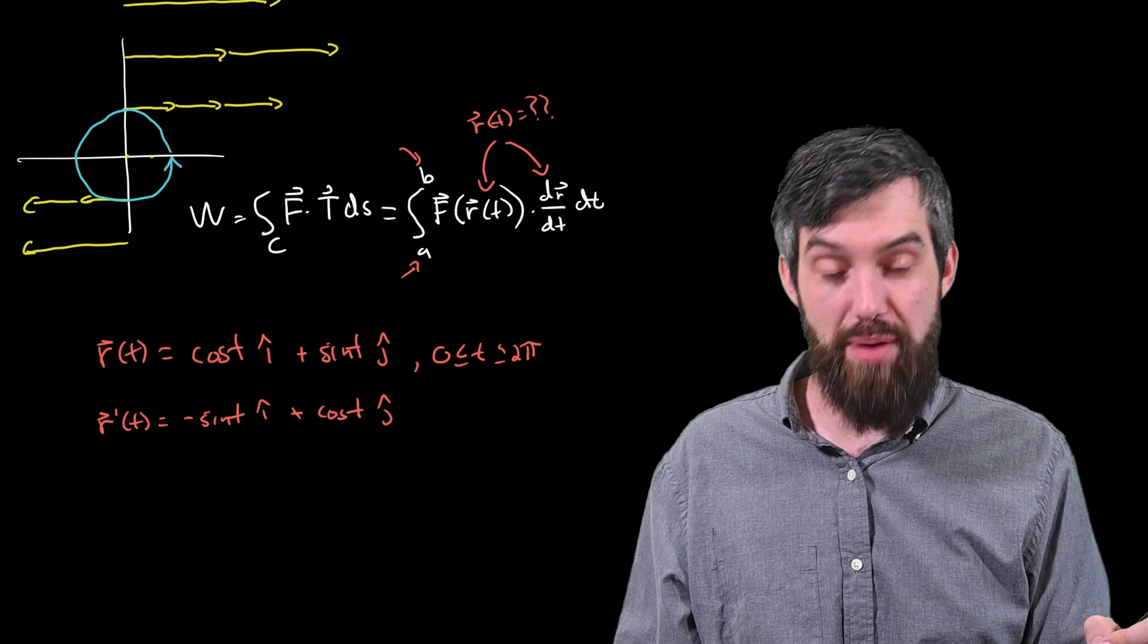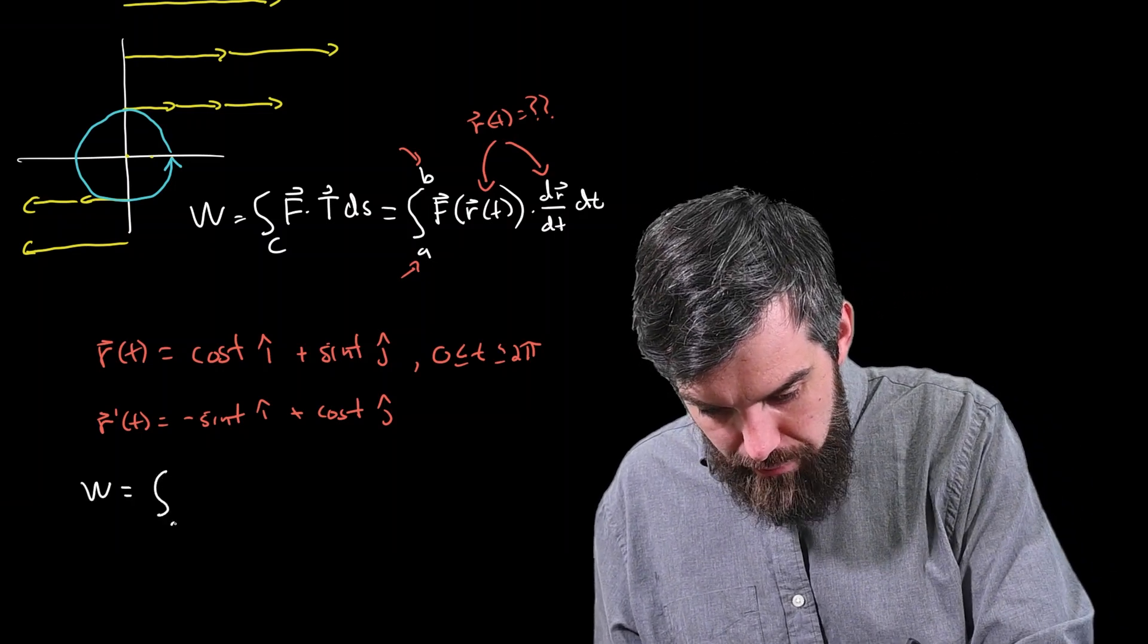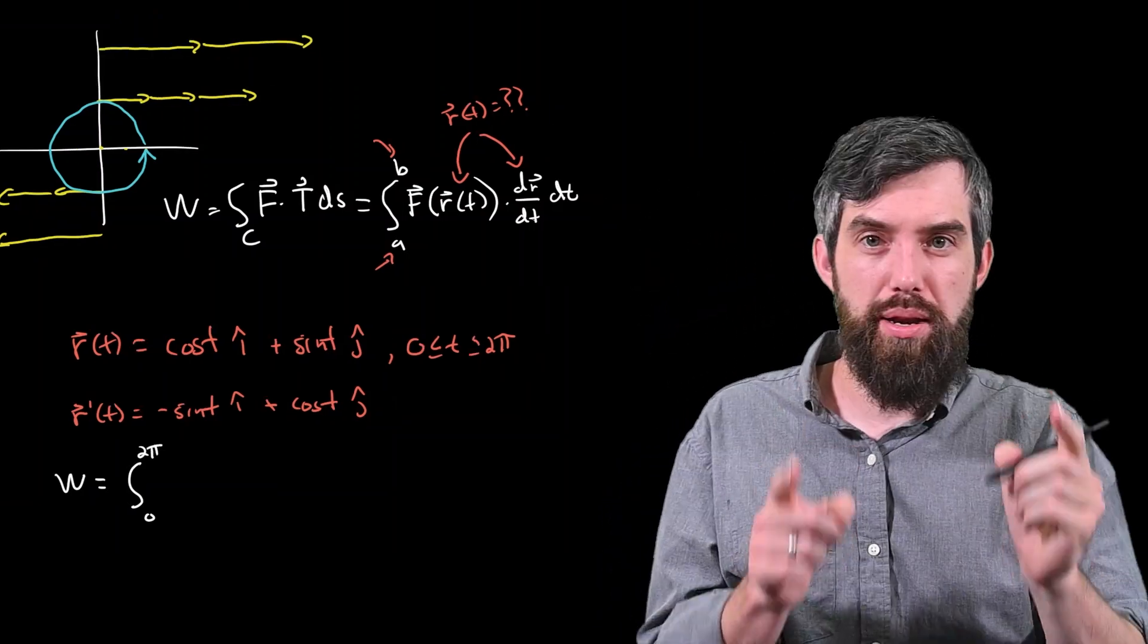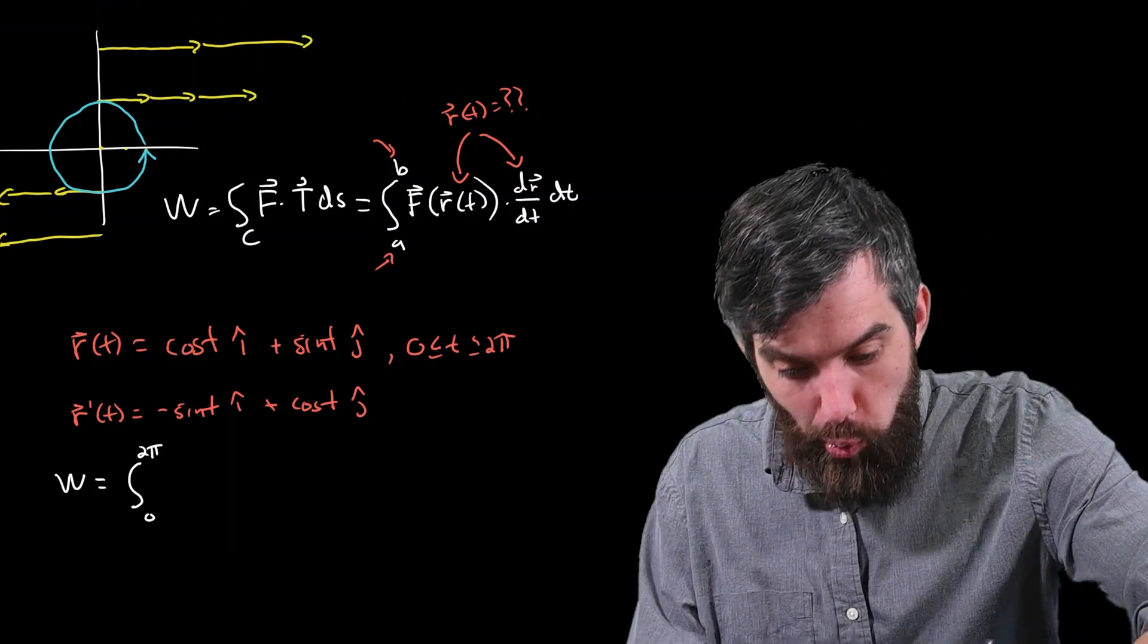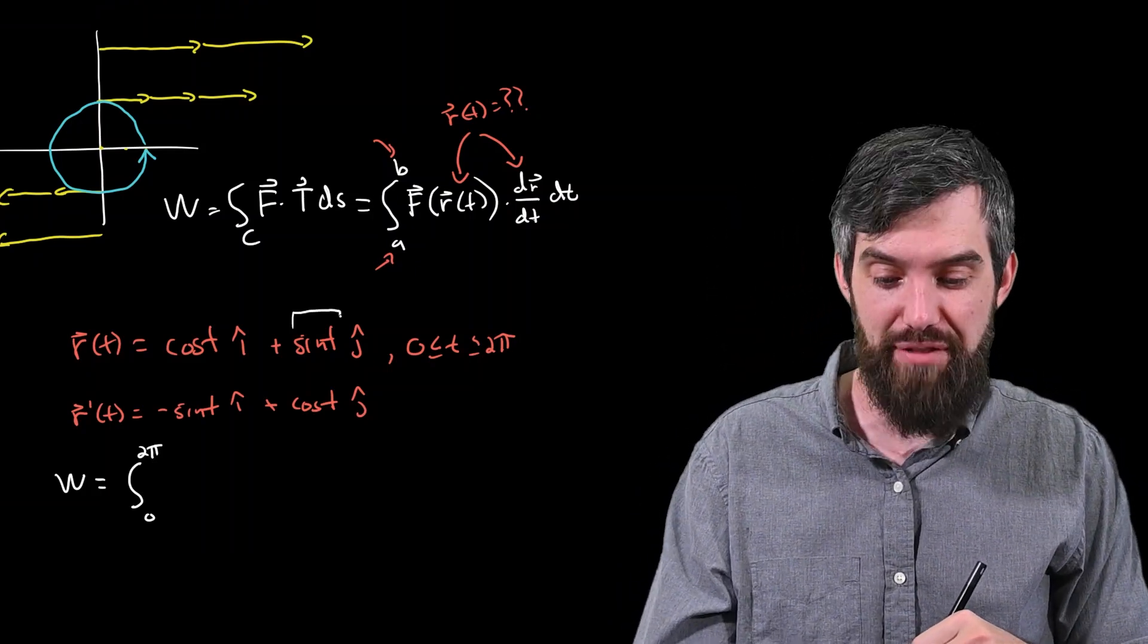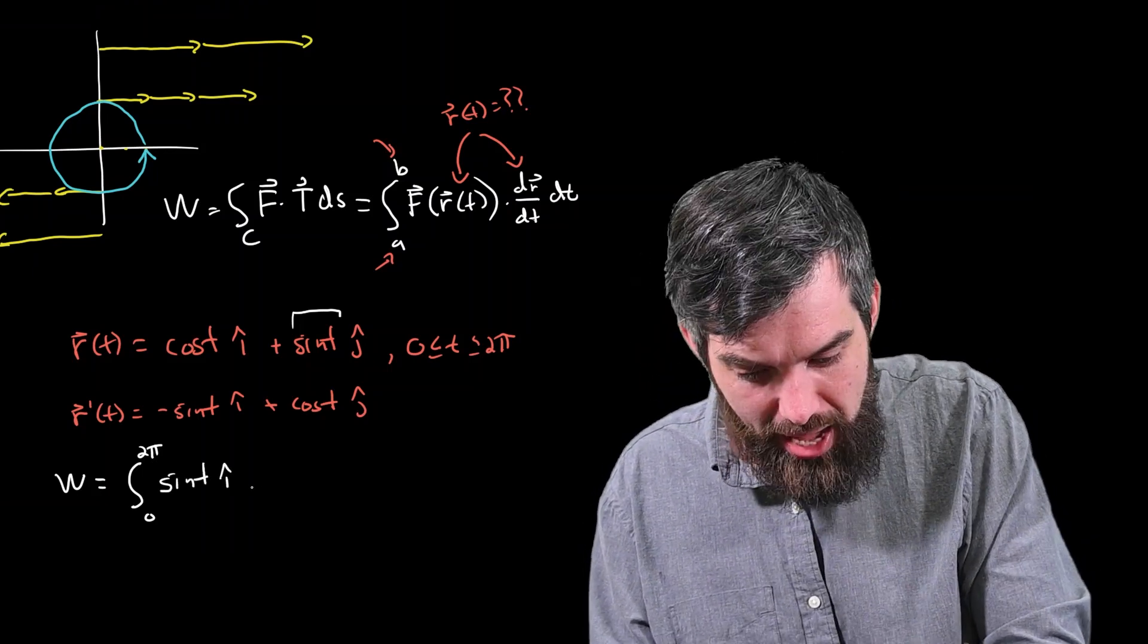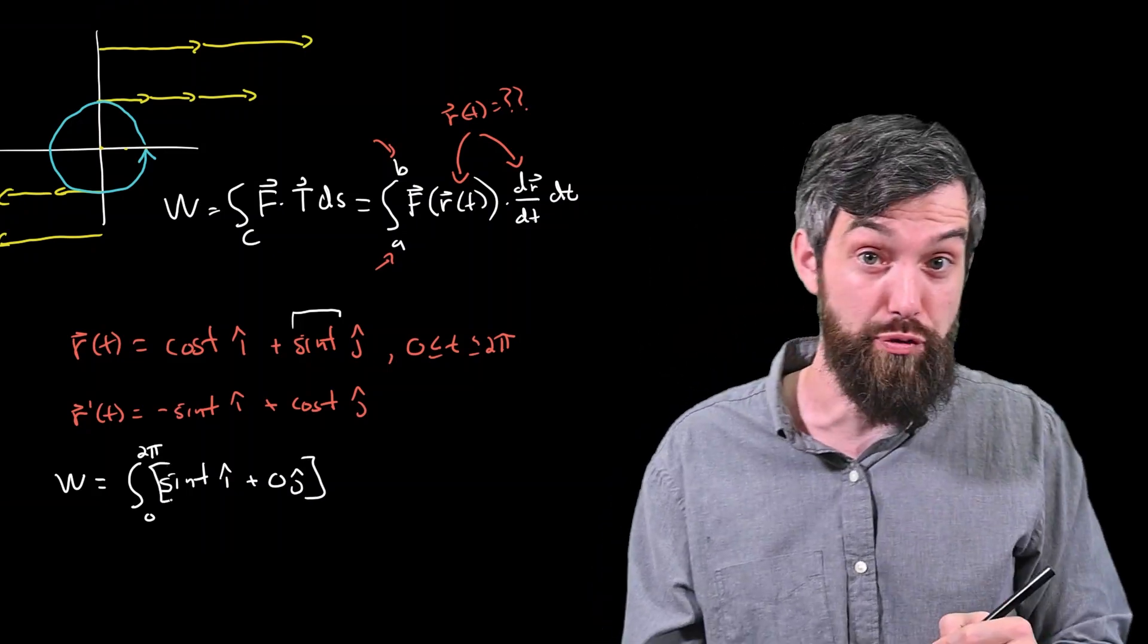So I'm now able to plug everything into my formula. What is my work? Well, it's the integral from 0 up to 2π. That's my limits of integration. Now, the field was just y in the i-hat direction. And so the y component along the particular position vector that I have is just sin(t). And so my y gets replaced with a sin(t) in the i-hat. And then the field also had a 0 in the j-hat. I may as well write it explicitly, but you don't have to if you don't want to.